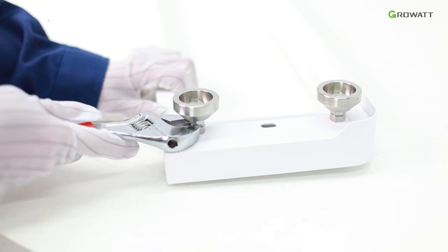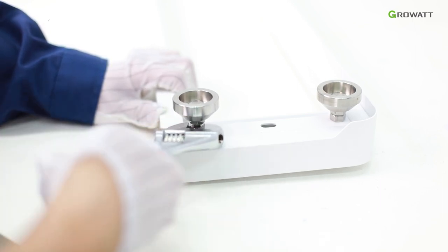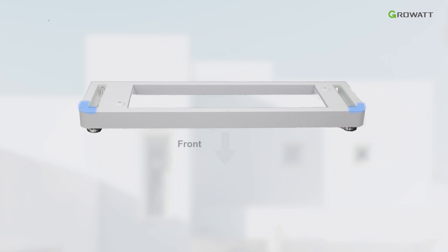Adjust the height of the ALP battery base to ensure that it rests horizontally on the floor. Put the battery base on the floor where it is close to the wall. Pay attention to the orientation of the battery and do not place it in reverse.